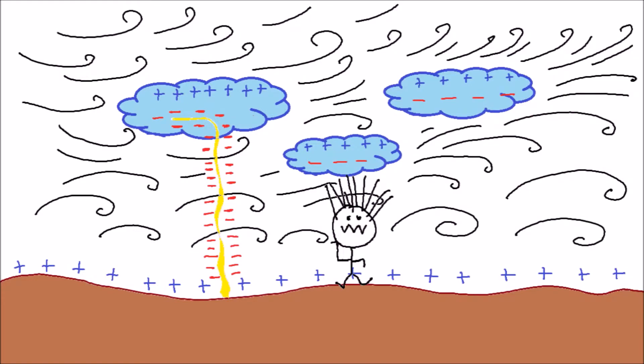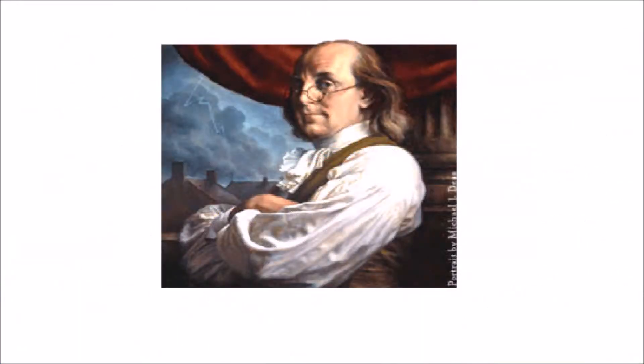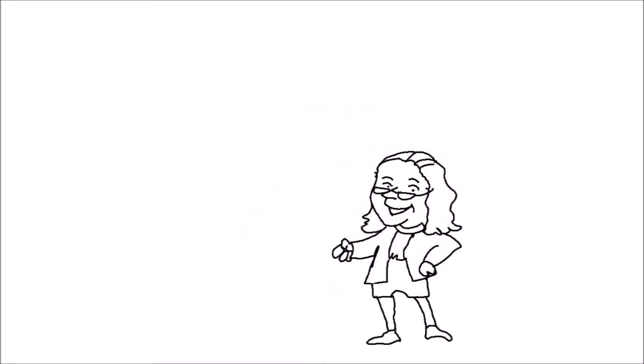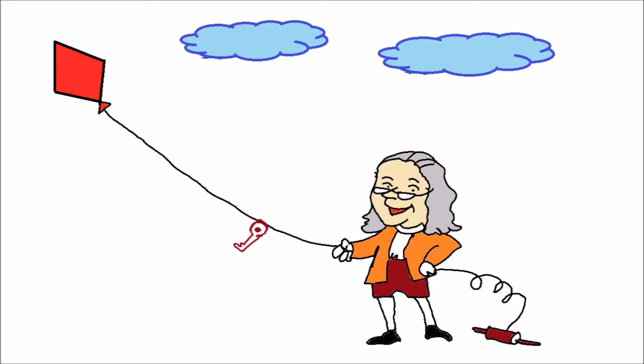In 1752, scientist Benjamin Franklin tied a metal key to a kite string and flew the kite in a thunderstorm. When he touched the key, he felt a powerful electric shock.